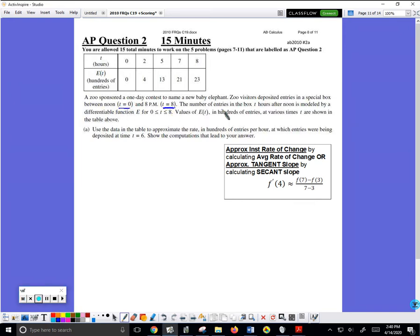The number of entries in the box so many hours after noon is modeled by a differentiable function e. Okay, it's important to note that e is an amount. e is the number of entries in the box. e is not a rate. So e is an amount, number of entries in the box.